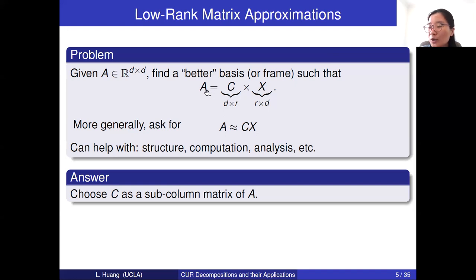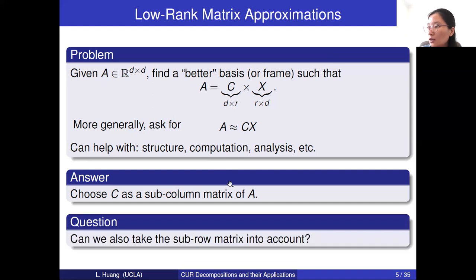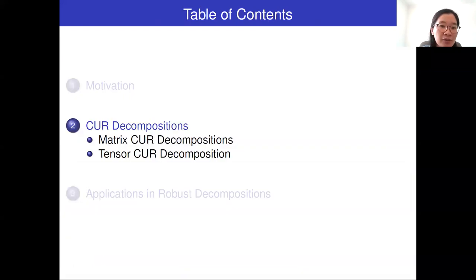This is computationally cheap because if you know C and want to find X, one natural approach is to set X to be C pseudo-inverse times A. Then the question is: why not also take a sub-row matrix into account? This idea produces the CUR decomposition. Next we will move to the CUR decomposition.